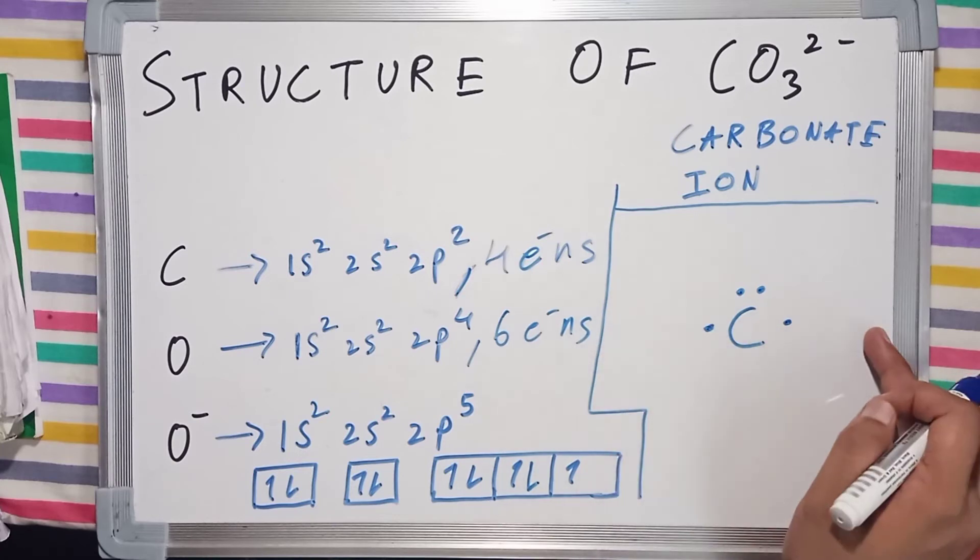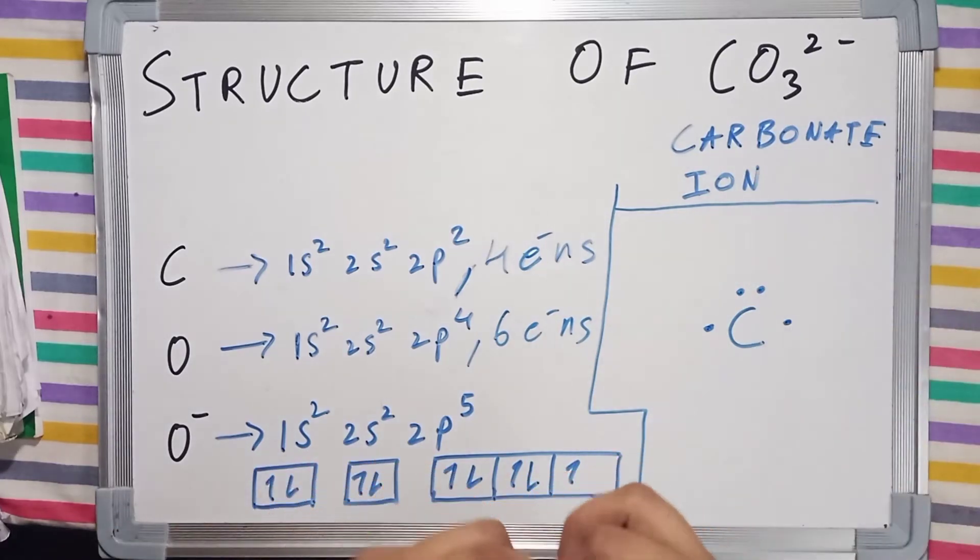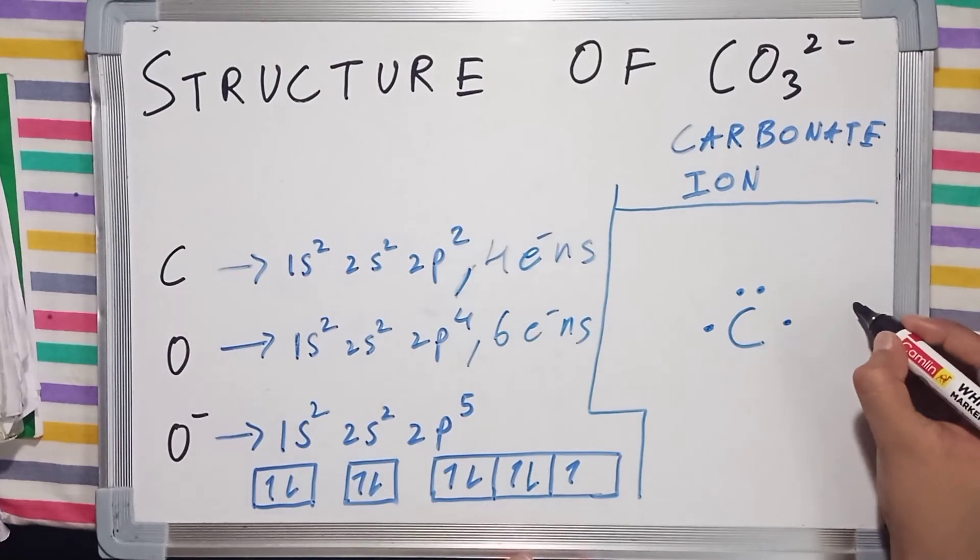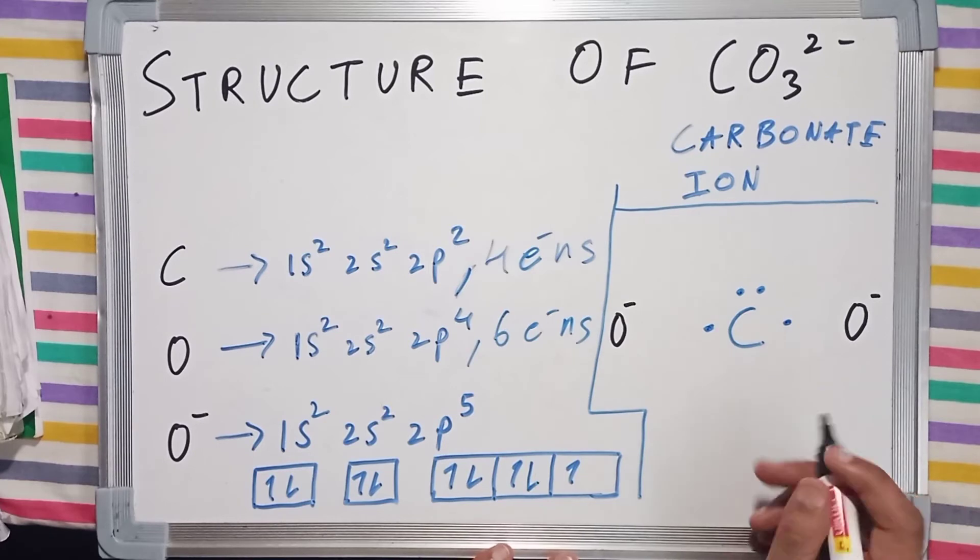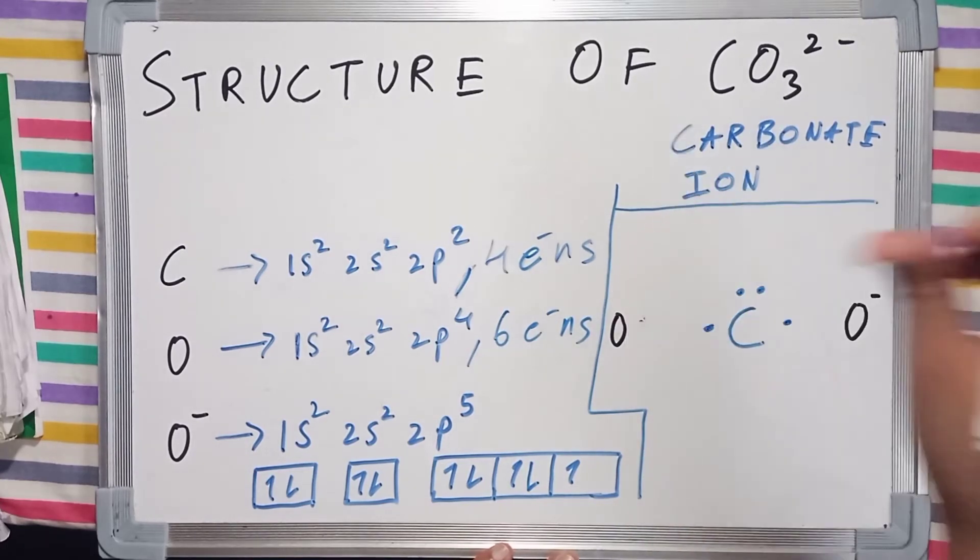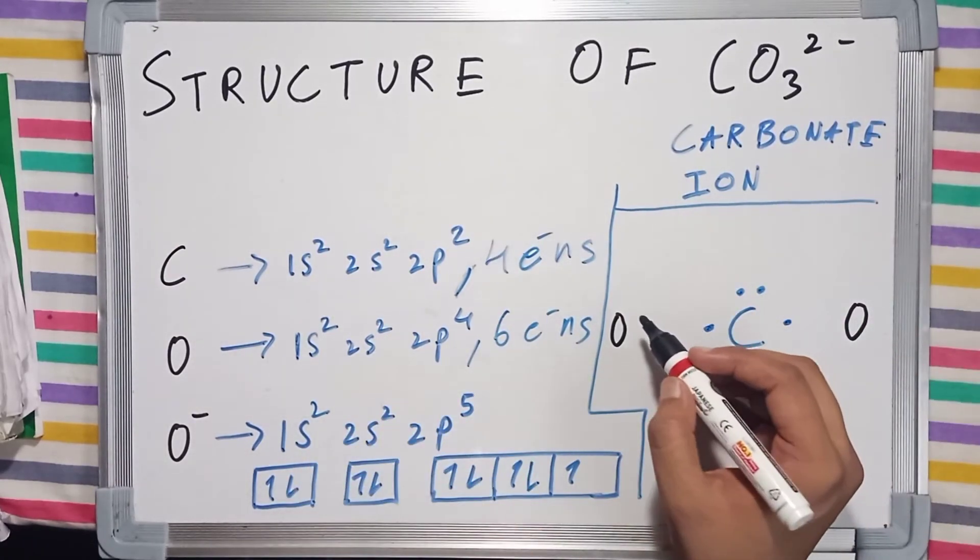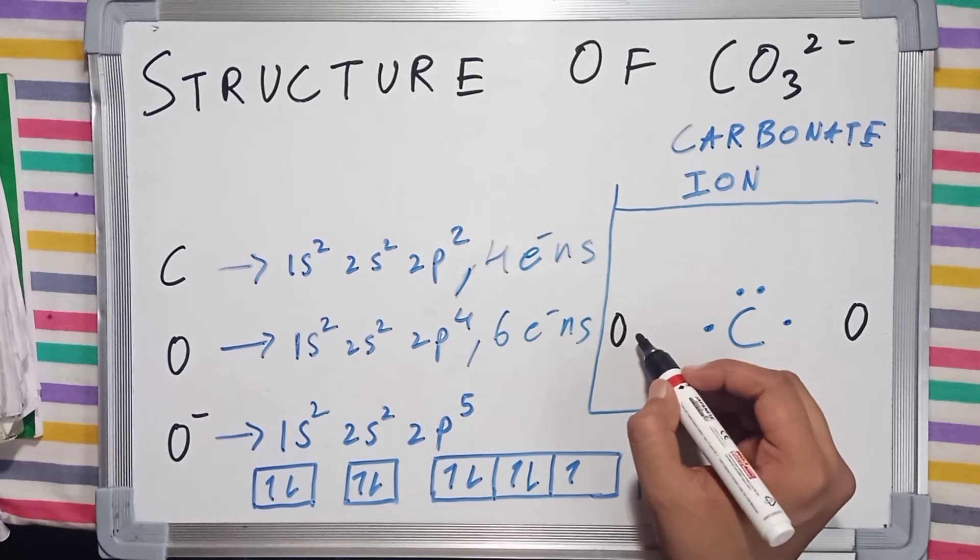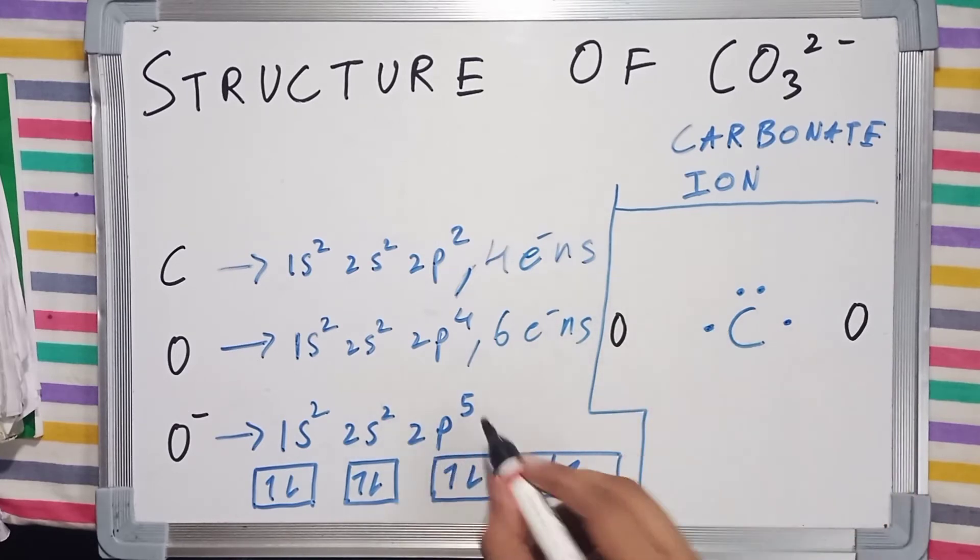We have 2 oxide ions, one here and one here, and then I'm going to make a double bond on the upper part of carbon. Now I'm going to draw the oxide ion. I'll place an extra electron to represent the negative charge, so it will have 7 electrons.